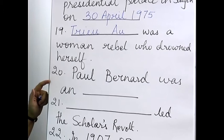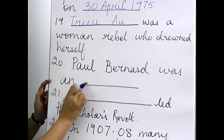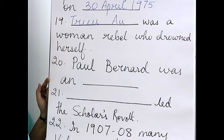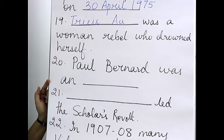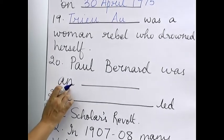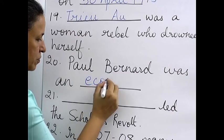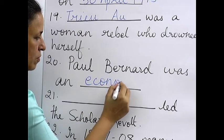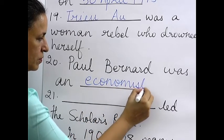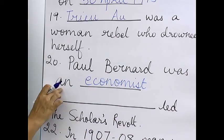Twentieth: Paul Bernard was an economist. The question already gives 'an,' so you know it starts with a vowel sound — he was an economist. That is the reason 'an' is already given, so in a way it gives you a clue.